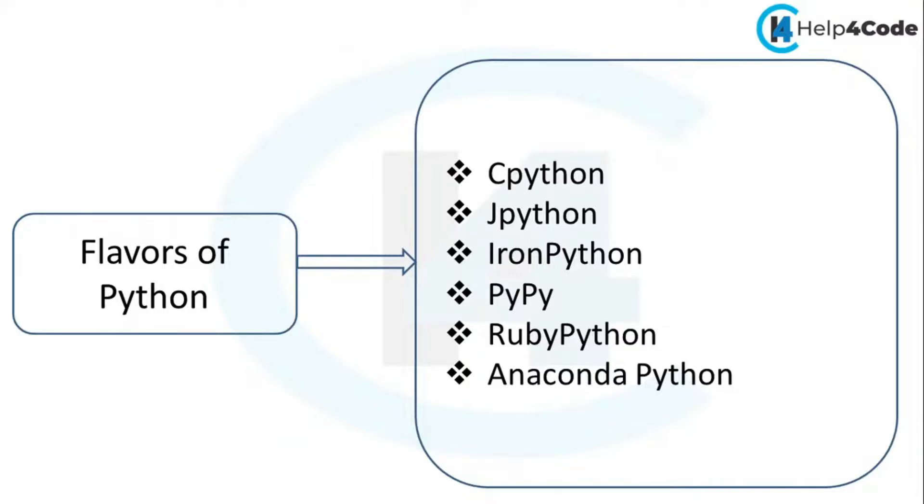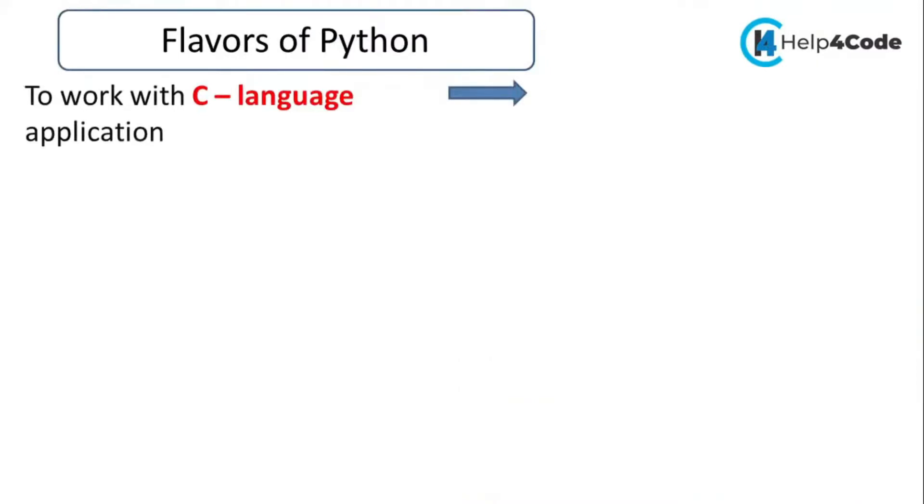So we will discuss what these are. In the case of flavors of Python, if you want to work with C language applications, it is the standard flavor of Python. This means it can be used to work with C language applications. So we have CPython.